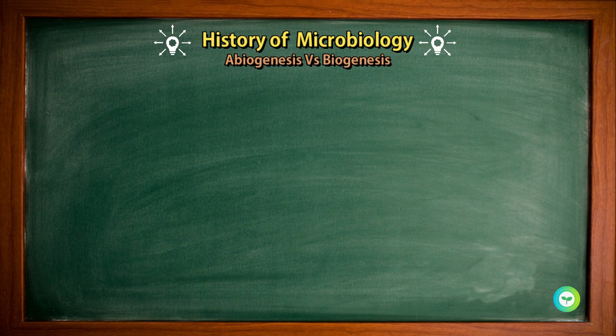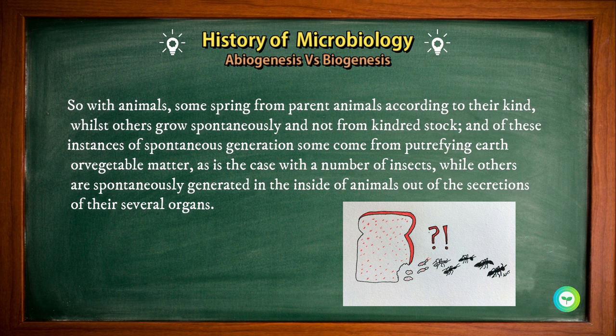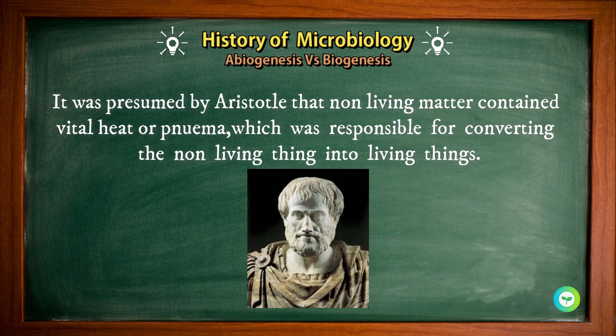So with animals, some spring from parent animals according to their kind, whilst others grow spontaneously and not from a kindred stock. Of these instances of spontaneous generation, some come from putrefying earth or vegetable matter, as in the case of a number of insects, while others are spontaneously generated inside animals out of secretions of their several organs. It was presumed by Aristotle that non-living matter contained vital heat or some Pneuma, which was responsible for converting non-living things into living things.